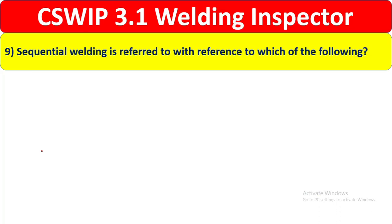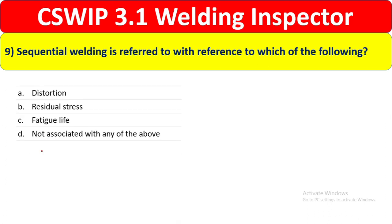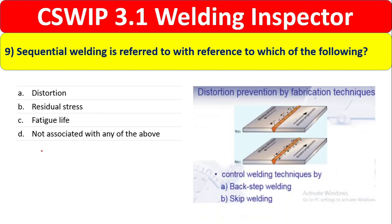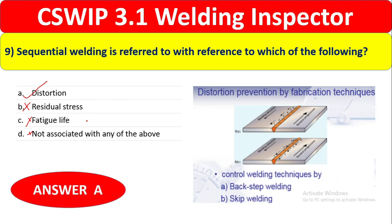Question 9: Sequential welding is referred to with reference to which of the following — distortion, residual stress, fatigue life, or none of the above? Sequential welding is performed to prevent distortion. Although questions 8 and 9 seem similar, the specific answer here is distortion. The correct answer is Option A: distortion.